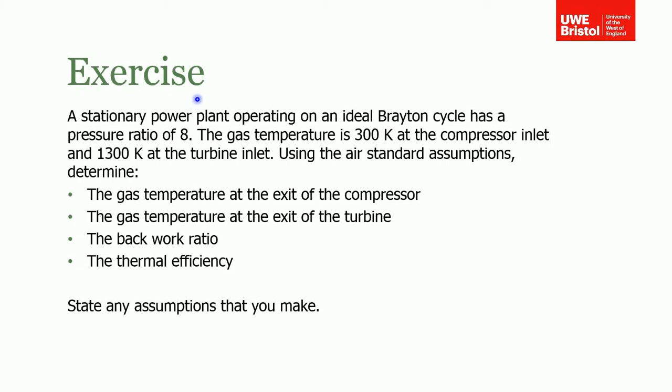Okay, in this exercise you're asked to work your way around a Brayton cycle thermodynamic cycle. The cycle has a pressure ratio of eight, and you're told the inlet temperature to the compressor and the turbine respectively. You're told, assuming air standard assumptions, to calculate the exit temperature of the compressor and turbine respectively, the power ratio for the whole cycle, and the thermal efficiency. Obviously state any assumptions you make.